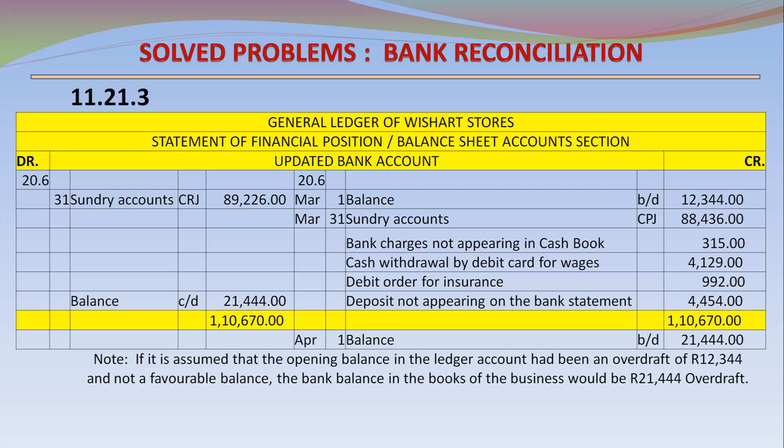Credit side: balance brought down 12,344; sundry accounts CPJ 88,436; bank charges not appearing in cash book 315; cash withdrawal by debit card for wages 4,129; debit order for insurance 992; deposit not appearing on the bank statement 4,454. Total credits 110,670. There is a balance of 21,444 when comparing total debits and total credits — balance carried down 21,444.